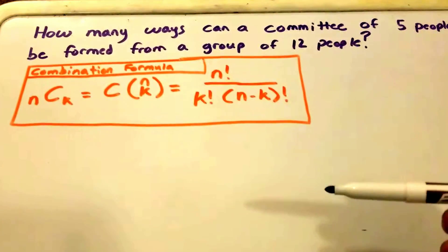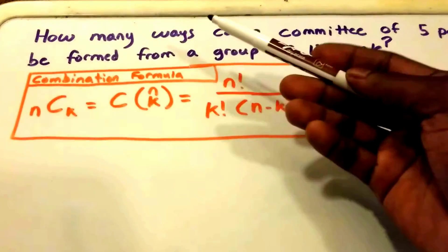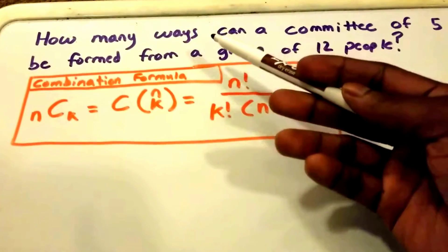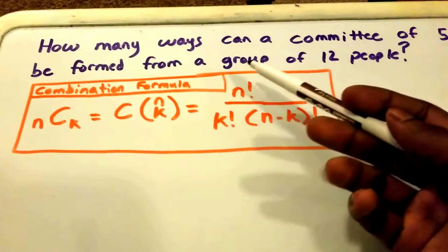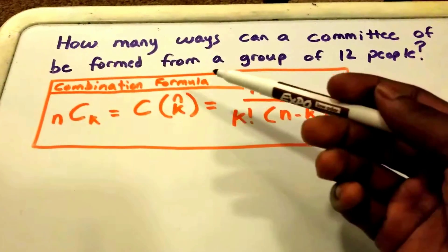Hey guys, welcome to this video on combinations. Here in purple I have our problem: how many ways can a committee of five people be formed from a group of 12 people?